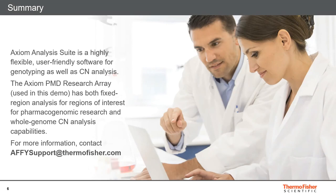Let's review. Now that we've gone through some of the basic features of copy number analysis with Axiom Analysis Suite, please refer to the Axiom Analysis Suite user guide for a full listing of available features. Axiom Analysis Suite is a highly flexible, user-friendly software for genotyping as well as copy number analysis. The Axiom Precision Medicine Diversity Research Array used in this demo has both fixed region analysis for regions of interest for pharmacogenomic research and whole genome copy number analysis capabilities. For more information on any Axiom Array or the Axiom Analysis Suite software, please contact affysupport at thermofisher.com.